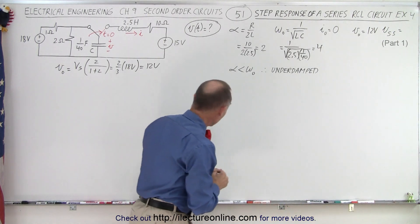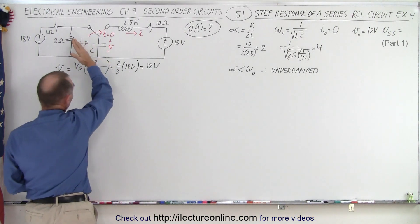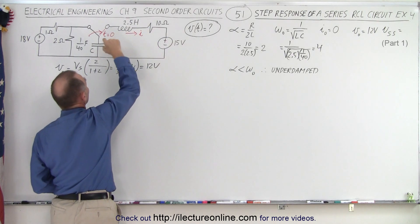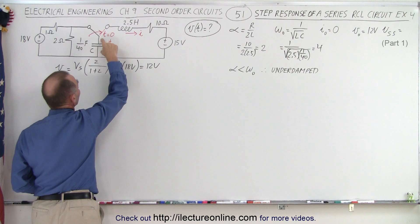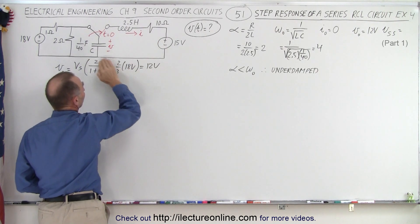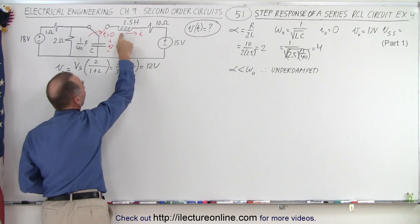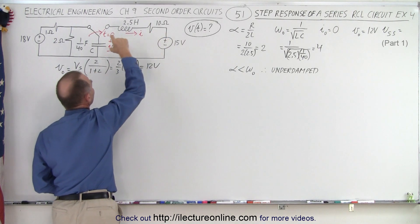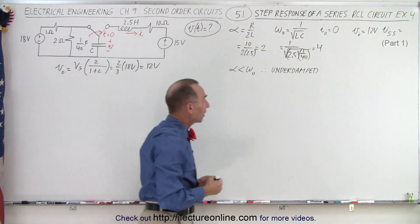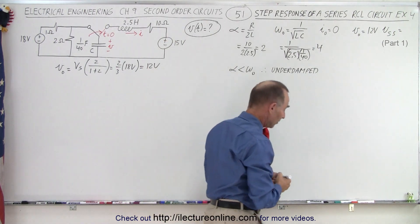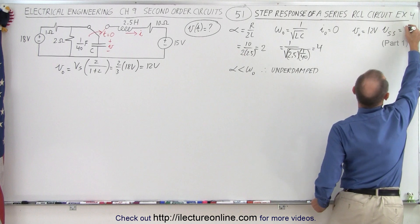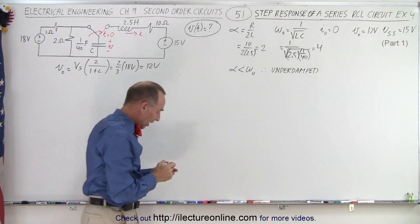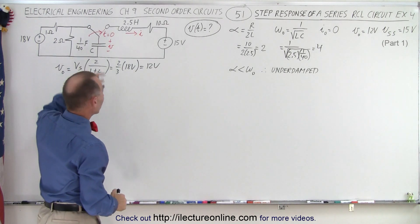What about the steady-state voltage? Once the switch goes to the other side, current flows through the circuit until the capacitor is fully charged. Once it's fully charged, there's no current flowing, no voltage drop across the inductor, no voltage drop across the resistor, and all 15 volts will be dropped across the capacitor. So we have a 15-volt final steady-state voltage across the capacitor.